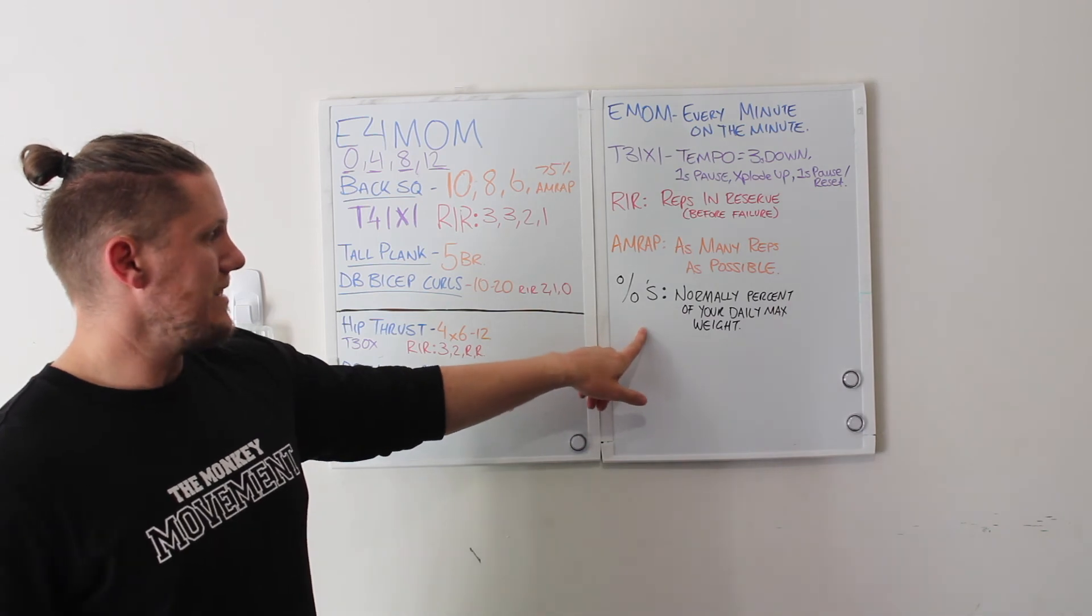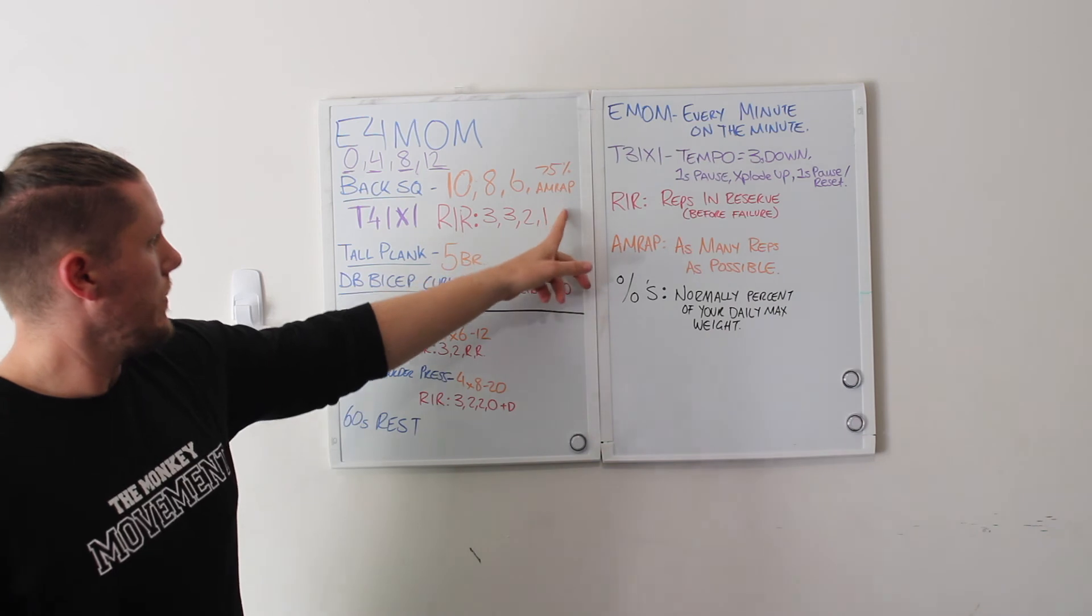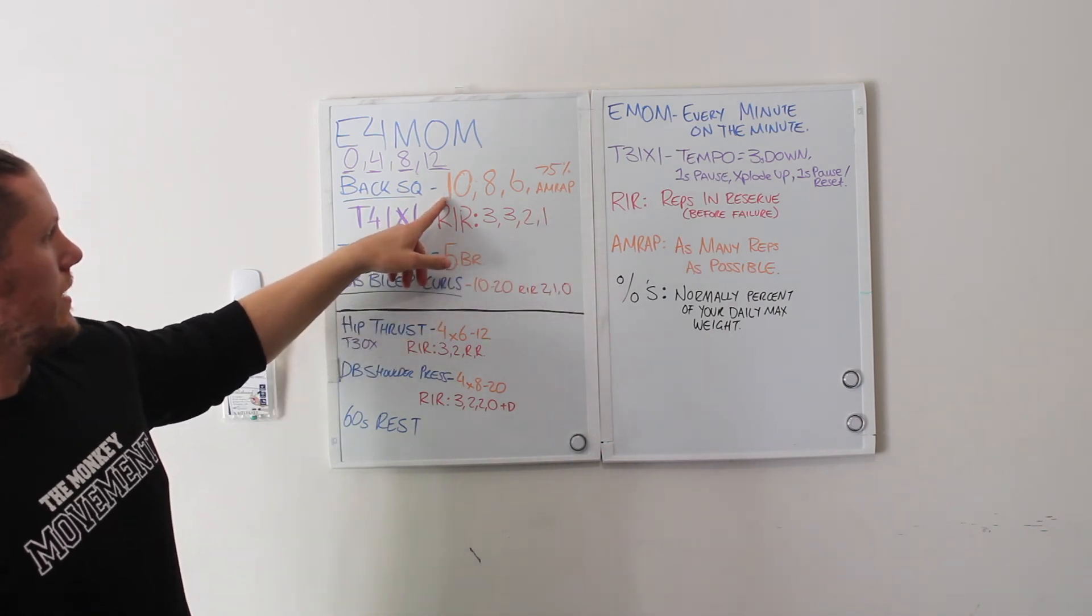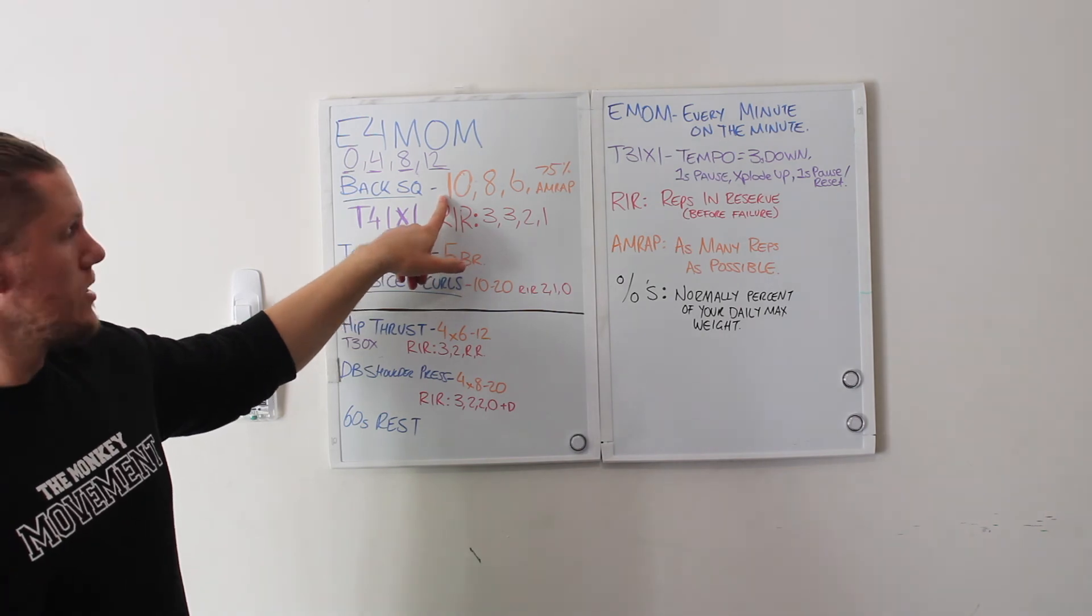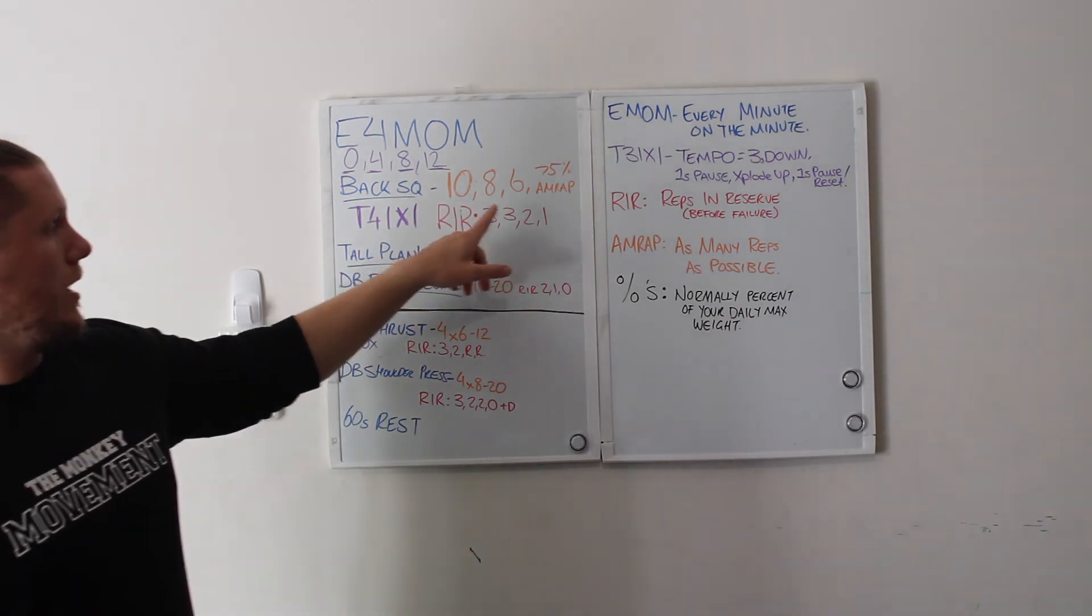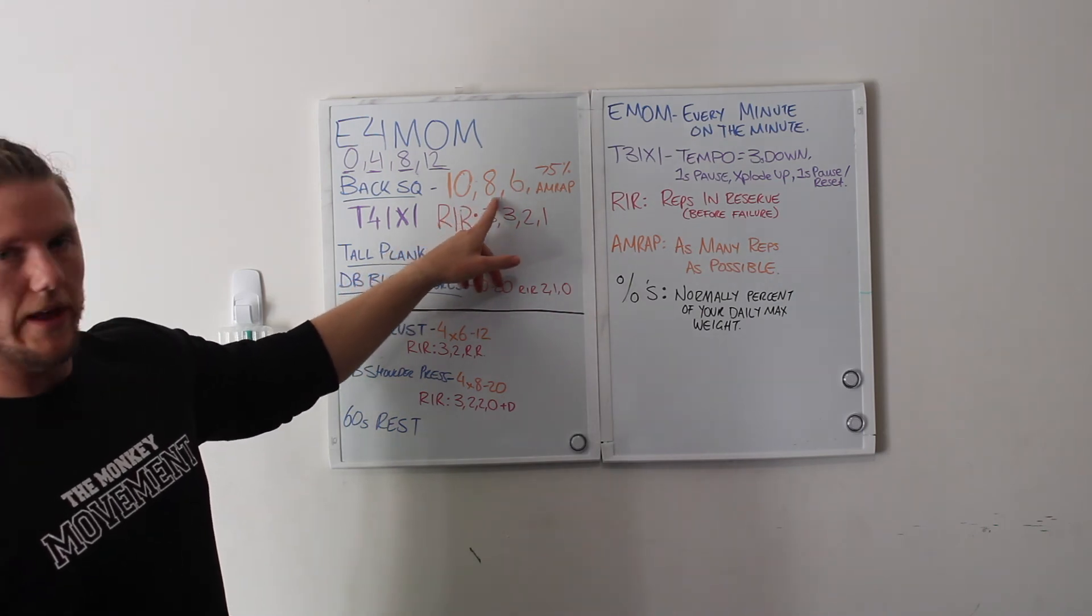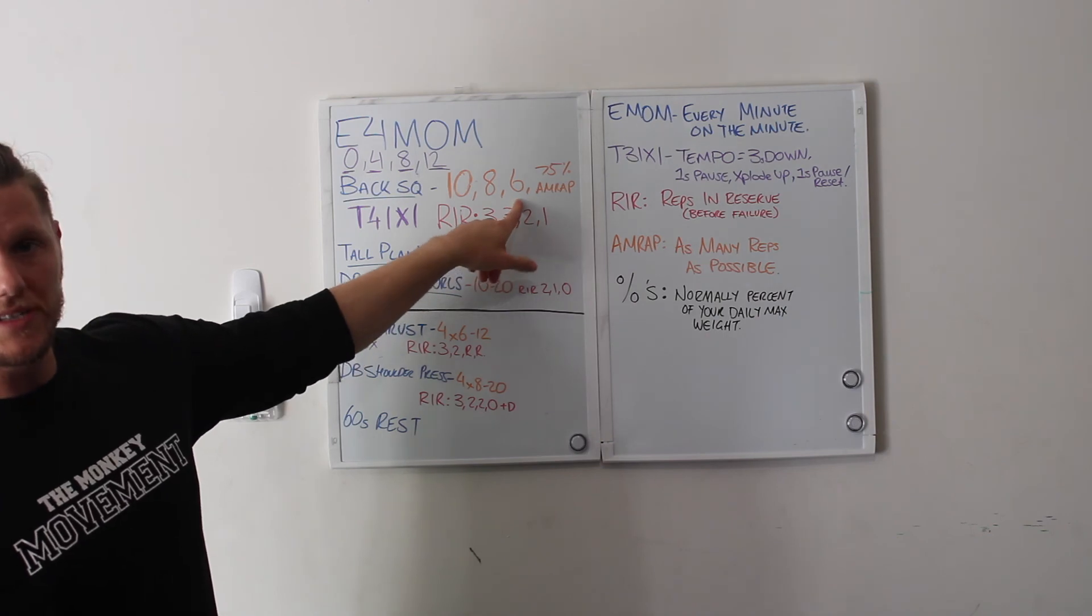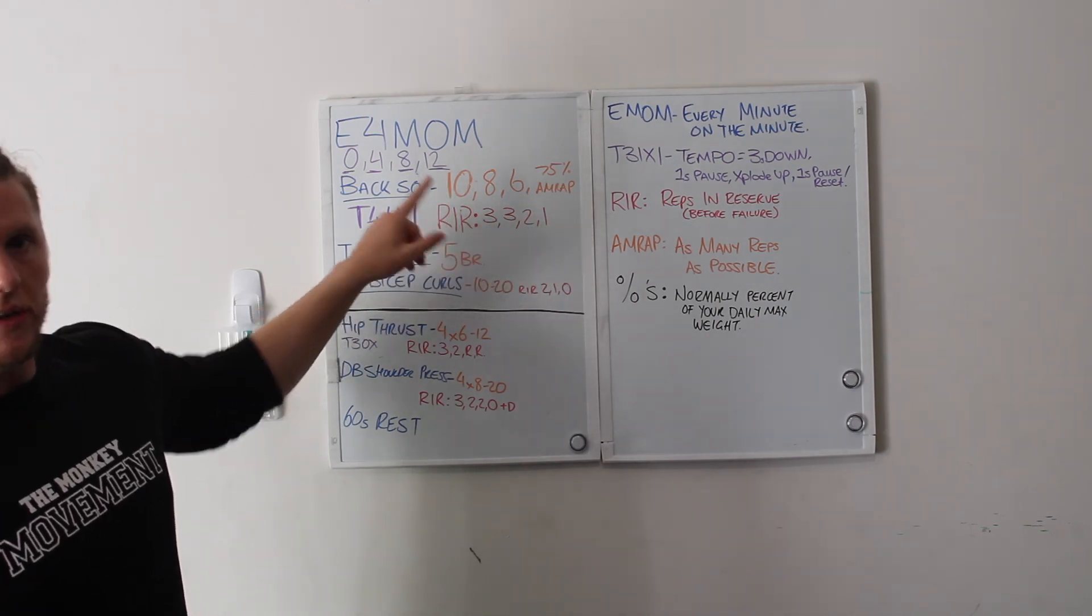And AMRAP, as many reps or rounds as possible, normally in the circuits, but as you can see here also in the squat. Percents, normally percentage of your daily max weight. So let's say that I chose 75 kilos to do my 10 rep with just because I thought that that would give me three reps in reserve. I would then do my eight, so I call that 90, and I do my six, which is 100. My 75% AMRAP I'll end up with what I did here.